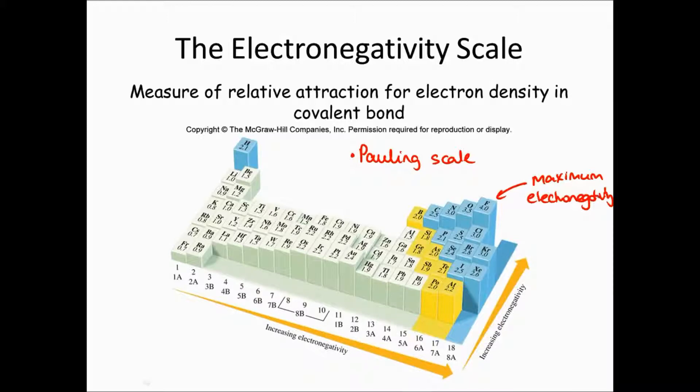One thing I will state is that I will not be providing you with the numbers themselves, but you don't really need to memorize them either. The overall trend across the periodic table is that as you go from left to right, as you go from bottom to top, the electronegativity increases.